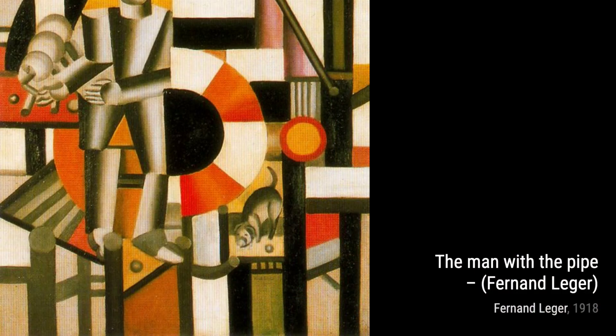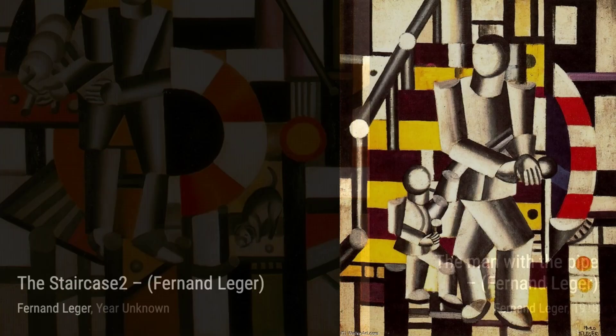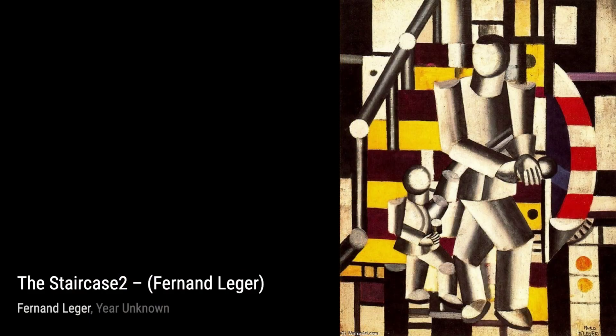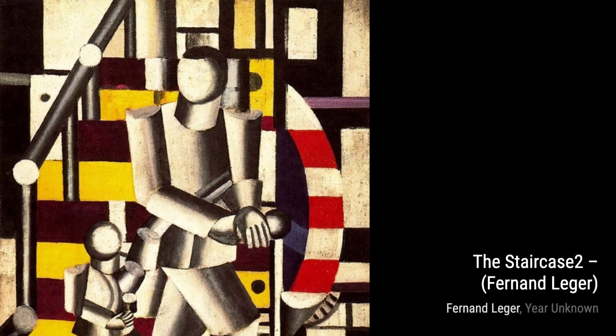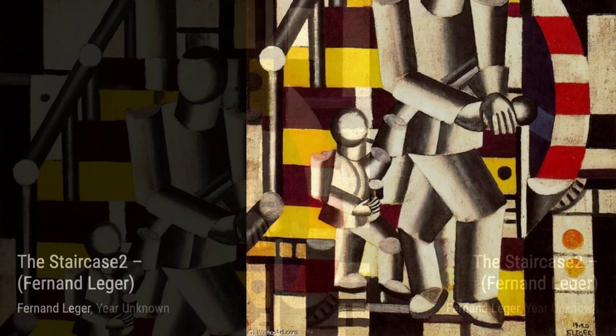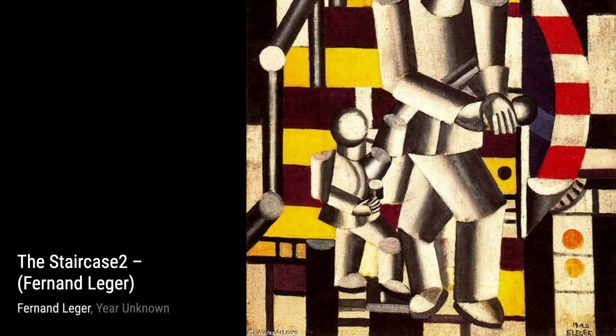The Staircase 2 is another masterpiece by Léger. The use of geometric shapes and vibrant colors creates a sense of rhythm and movement, drawing the viewer into the scene. Moving on to Untitled, 1612, Léger continues to explore the relationship between form and color. The bold and abstract shapes in this painting create a sense of mystery and intrigue.